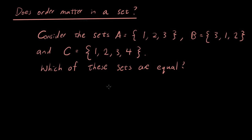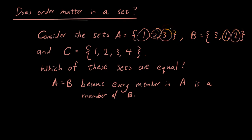So basically I want to be able to say A equals B or A equals C or something like that. Which of these sets are equal? The answer is that A is equal to B, and the reason is because every member in A, so the numbers 1, 2, and 3, is a member of B as well. You can see 1 is also a member of B, 2 is a member of B, and 3 in A is also a member of B. So every member in A is a member of B. Therefore, the sets A and B are equal.